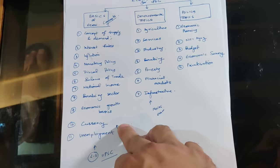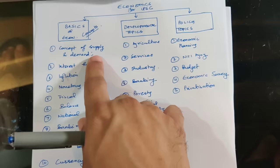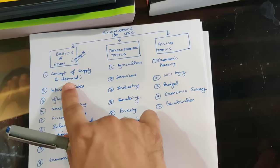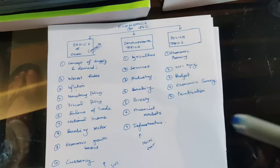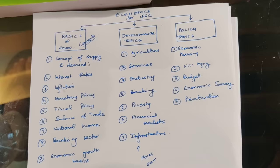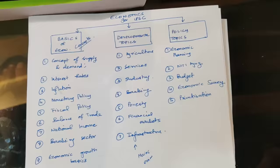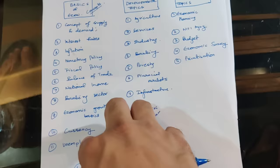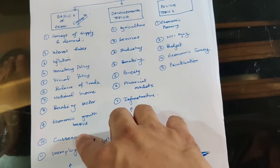First, you need to understand the concept of supply and demand. I'm going to tell you the sources — I've created a source page which I will also post on my community channel. You can learn supply and demand from the NCERT microeconomics book of class 11th, which is a very simple and straightforward book. You don't need to really learn more than two chapters from that book. Topics 2 to 11 are the main core topics — even if you find supply and demand too mathematical, you can focus on those.